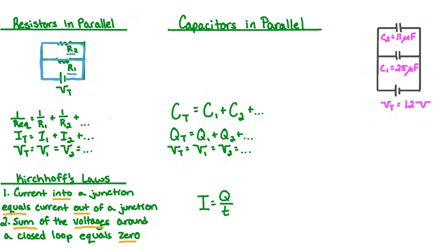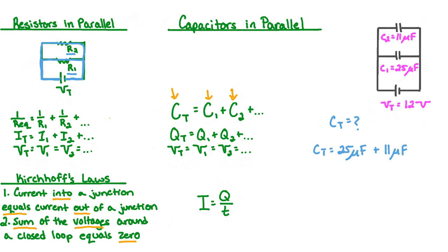Let's apply our equations for capacitors in parallel by giving values to our diagram such that our potential difference of the battery is 12 volts, the capacitance of capacitor 1 is 25 microfarads, and the capacitance of capacitor 2 is 11 microfarads. Let's start by determining the total capacitance of our circuit. The equation to find the total capacitance of a parallel circuit is Ct equals C1 plus C2. The total capacitance is equal to 25 microfarads plus 11 microfarads, which gives us 36 microfarads.